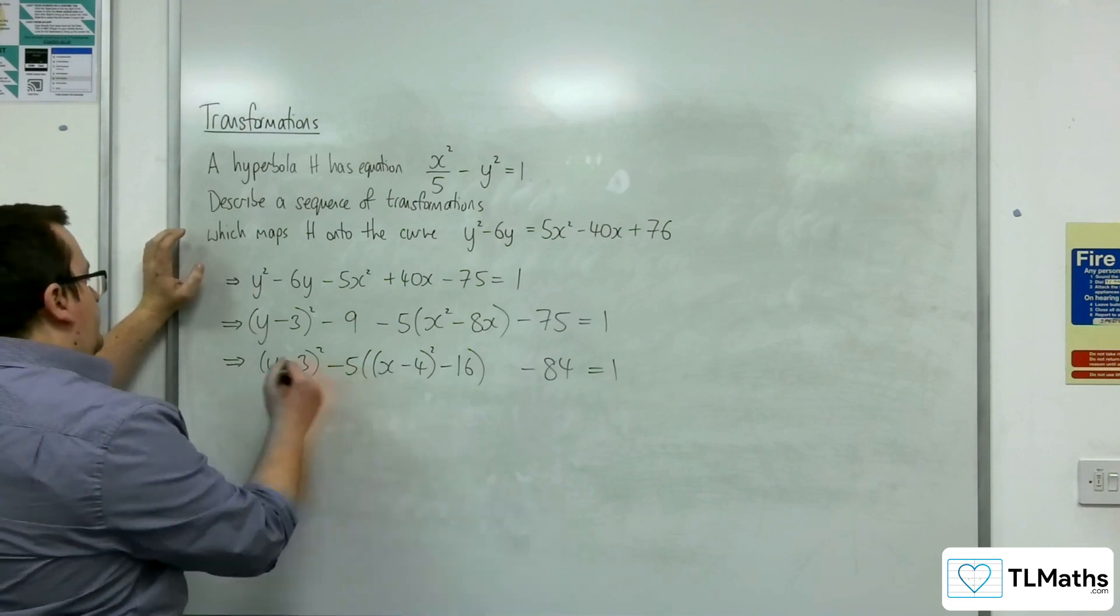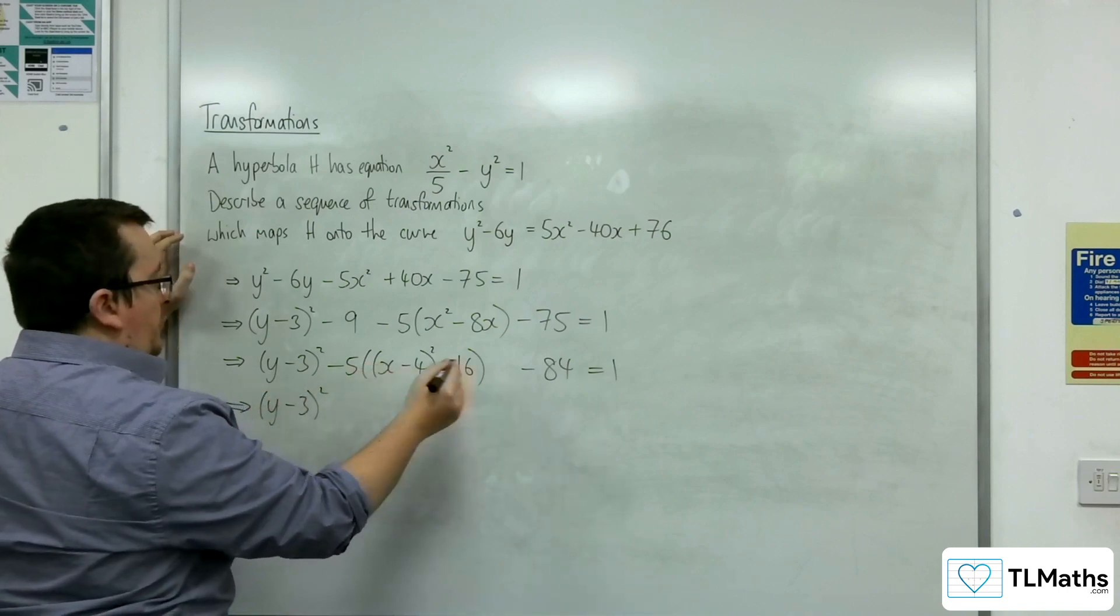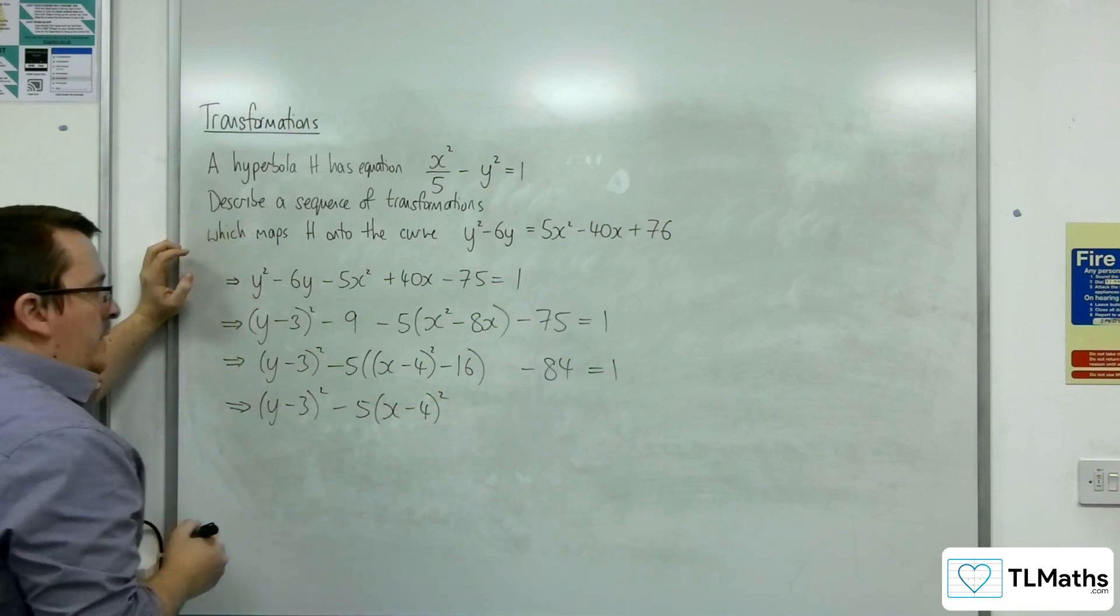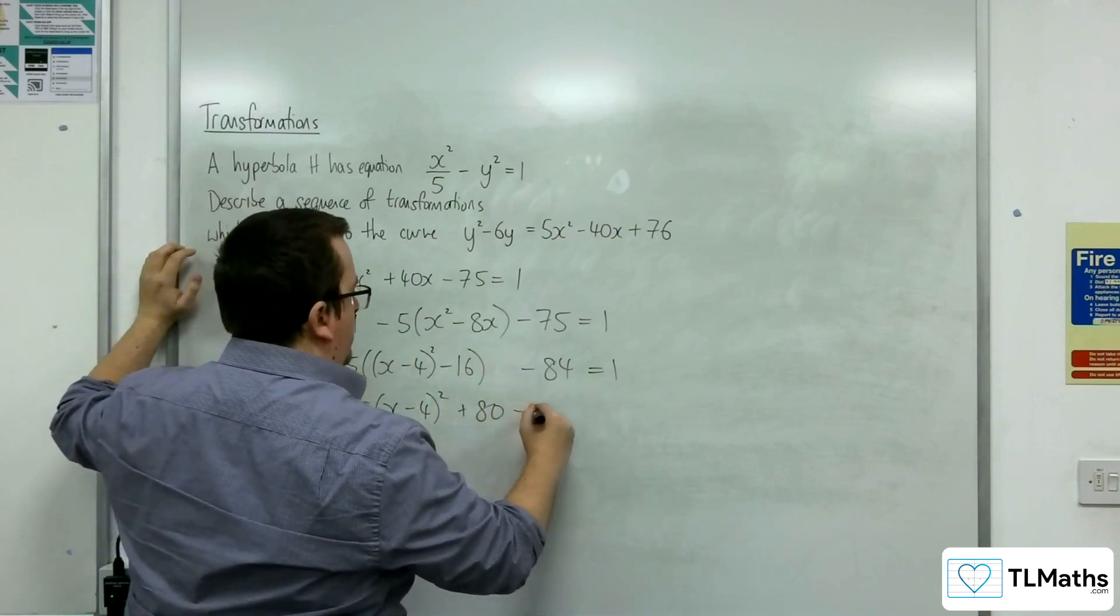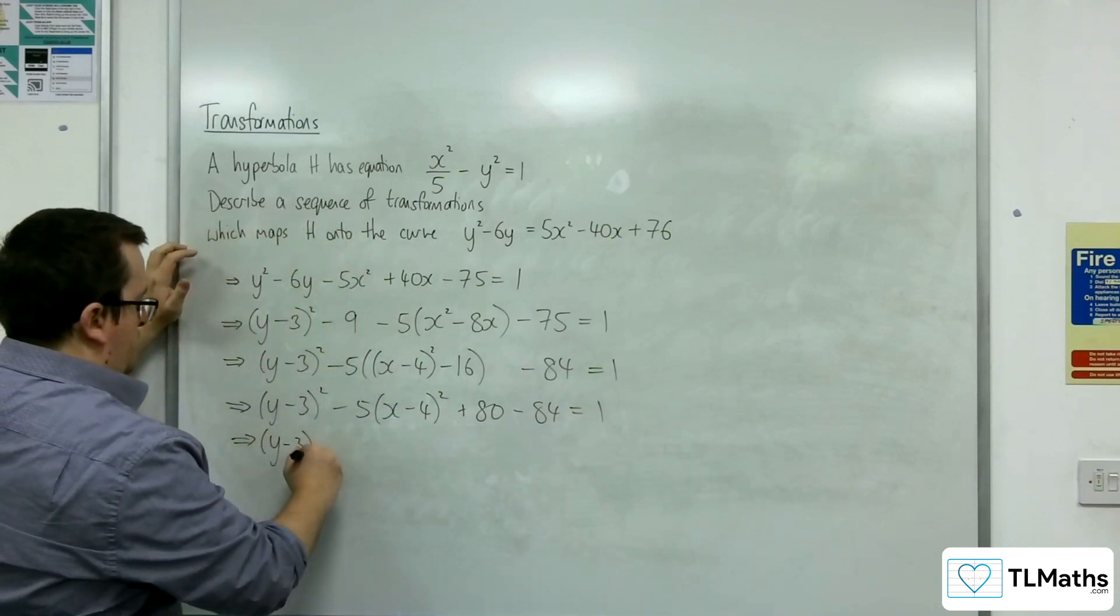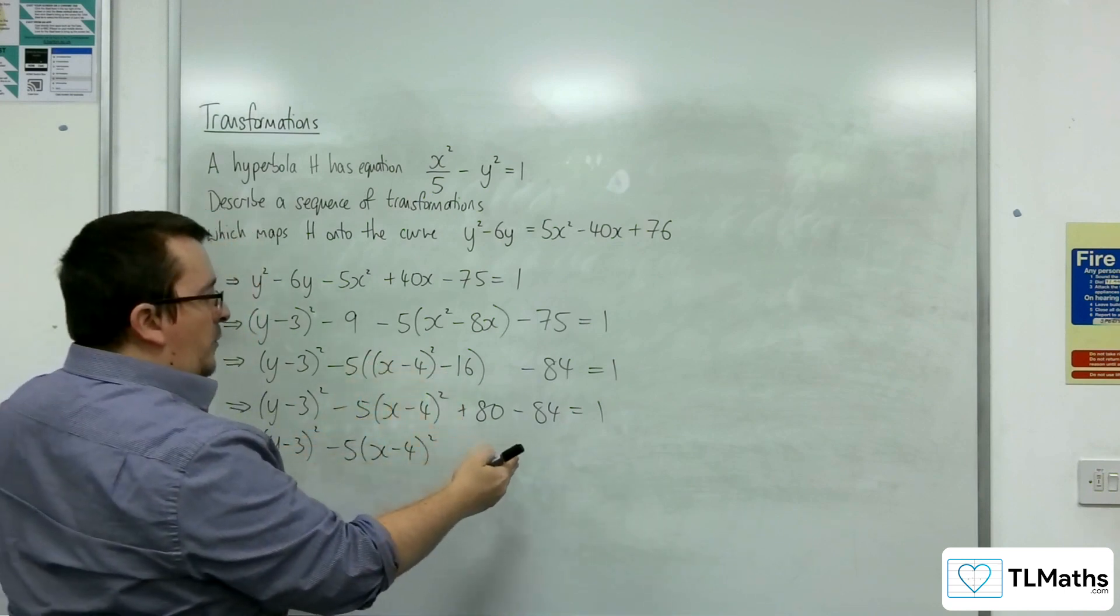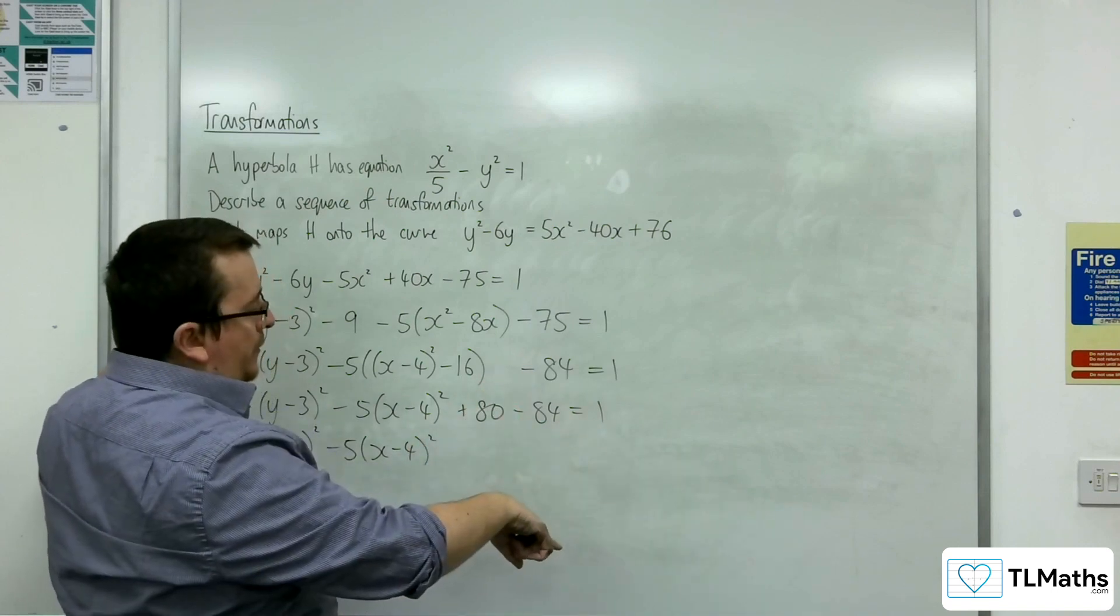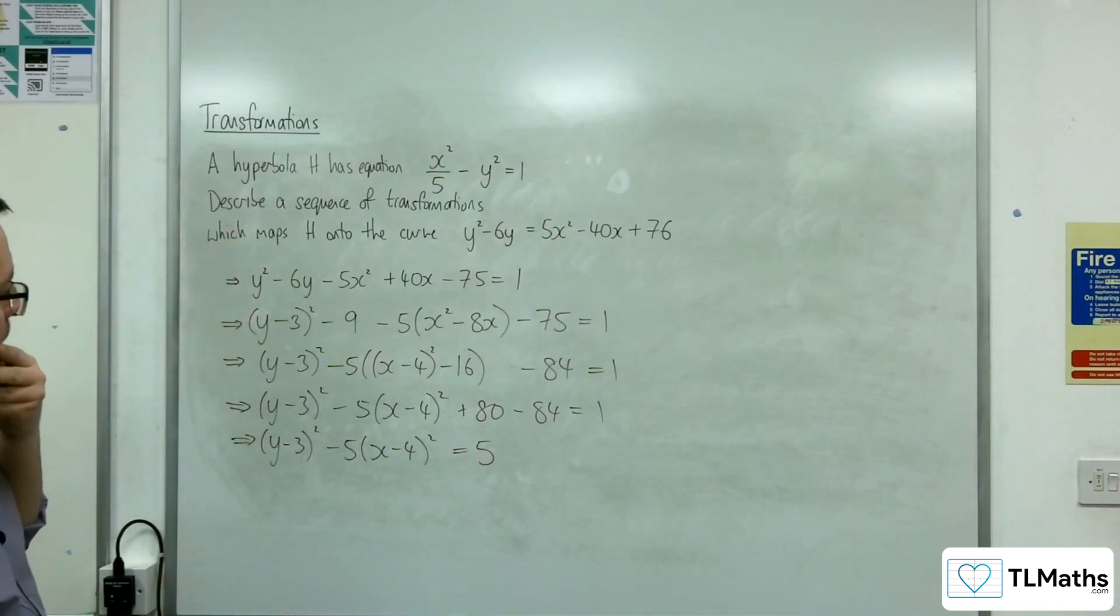So we've got the y minus 3 all squared. I'm going to expand this out. So minus 5 lots of x take away 4 squared. Then minus 5 times minus 16 is plus 80. Take away the 84 equals 1. So 80 take away 84 is minus 4. So if I actually add the minus 4 to both sides, I will get 5. So add 4 to both sides, I'll get the 5.